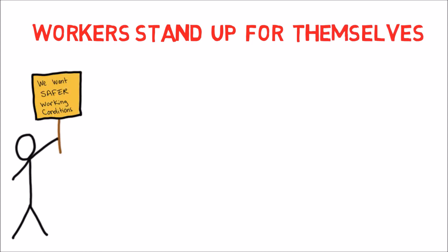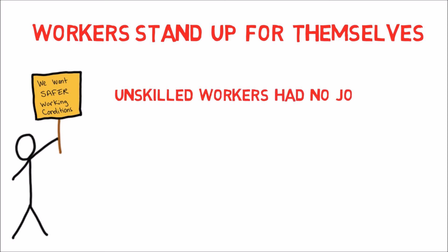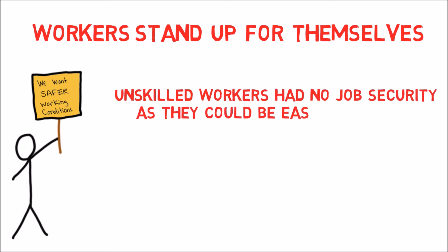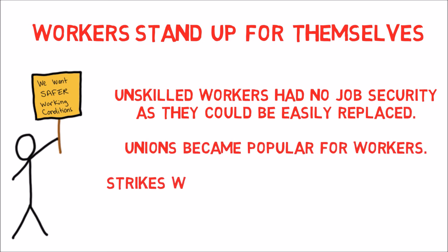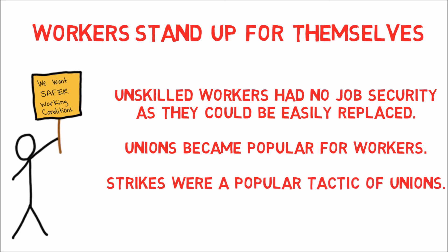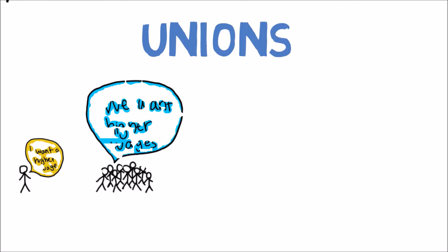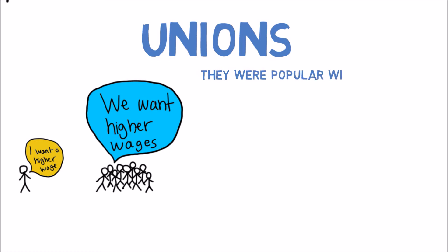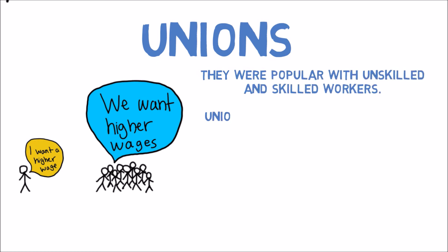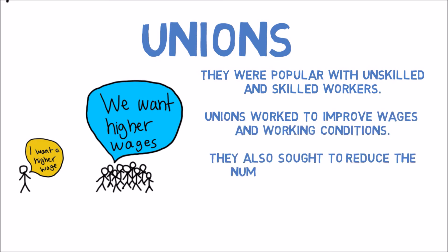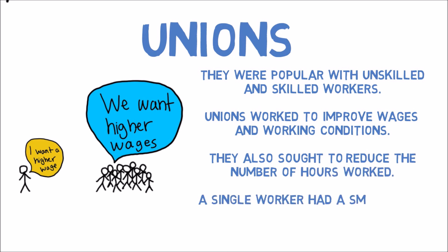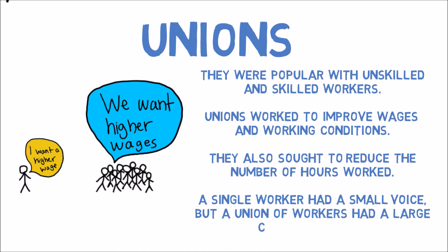Workers began to stand up for themselves. Unskilled workers had no job security, as they could be easily replaced. Unions became popular — strikes were a common tactic. Unions were popular with both unskilled and skilled laborers, and worked to improve wages and working conditions and reduce hours worked. A single worker had a small voice, but a union of workers had a large collective voice.